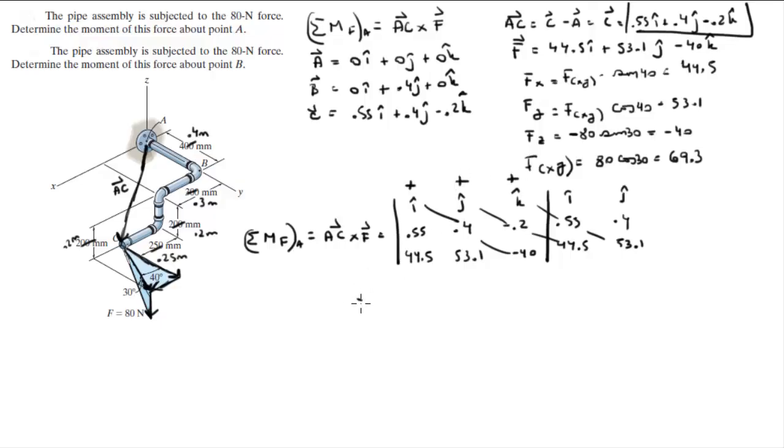You do your positive diagonals. And i times 0.4 times negative 40 is negative 16 in the i. J times negative 0.2 times 44.5 is negative 8.9 in the j. And k times 0.55 times 53.1 is positive 29.2 in the k.